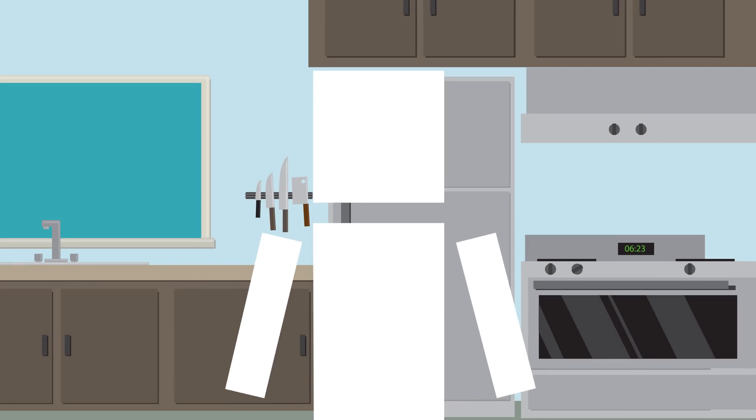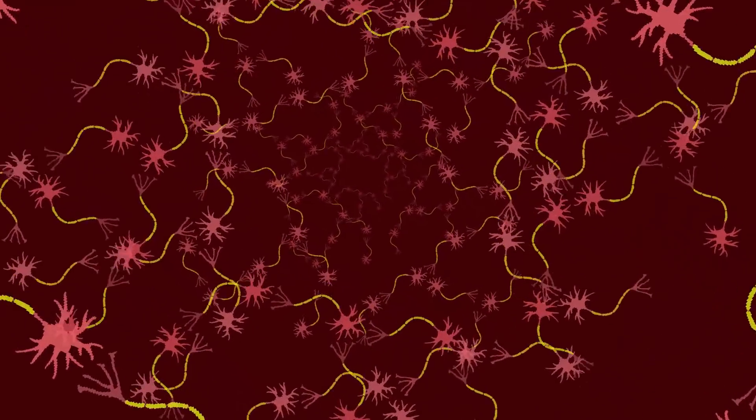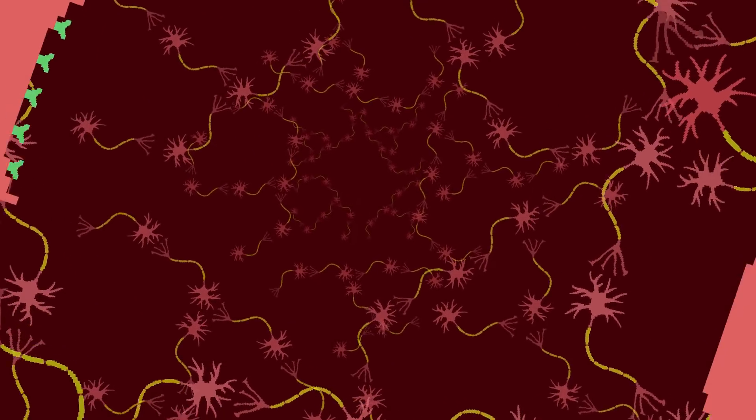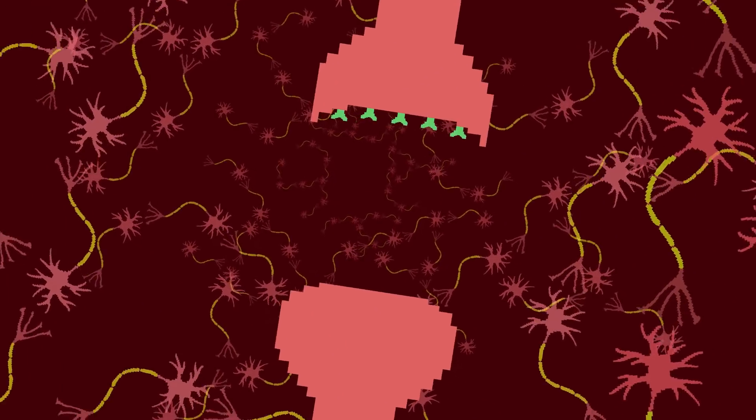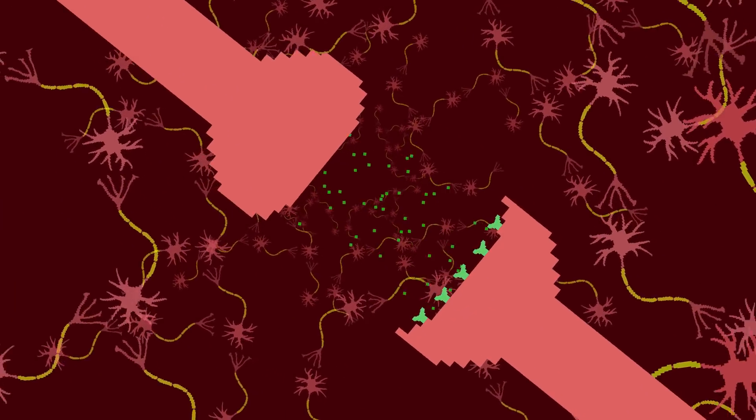It may help to first understand what memories are. Your brain contains around 100 billion neurons that communicate with each other across gaps called synapses, using proteins and chemicals called neurotransmitters.